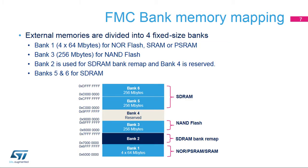The external memory space is divided into fixed-size banks of 256 megabytes each. Four external memory banks are dedicated to the FSMC. Bank 1 is connected to the NOR PSRAM controller. Bank 3 is connected to the NAND controller, and banks 5 and 6 are connected to SDRAM. Bank 2 is used for SDRAM bank remap, and bank 4 is reserved.